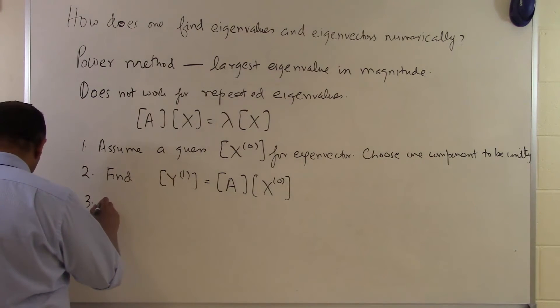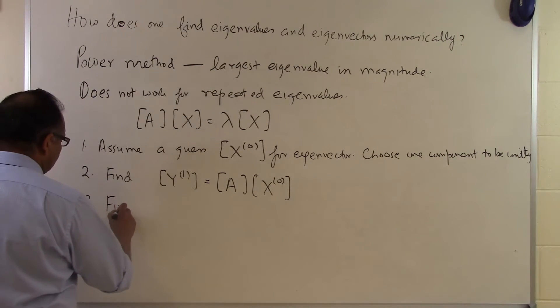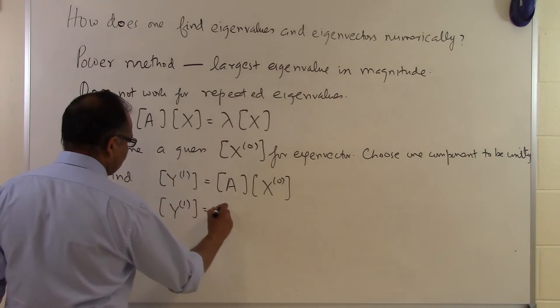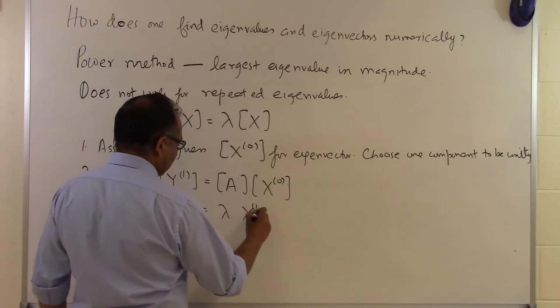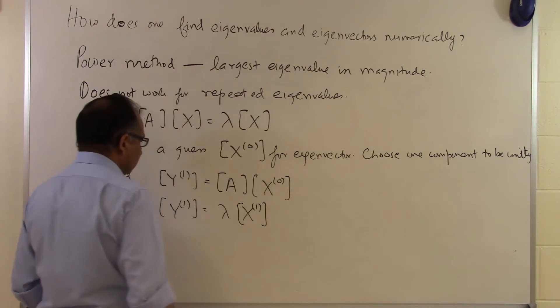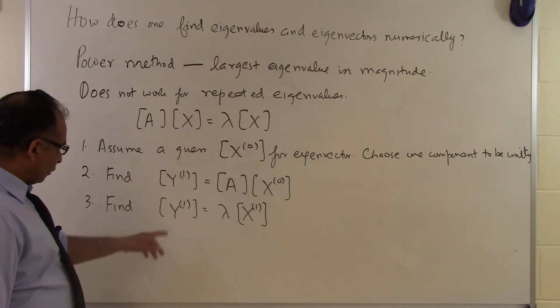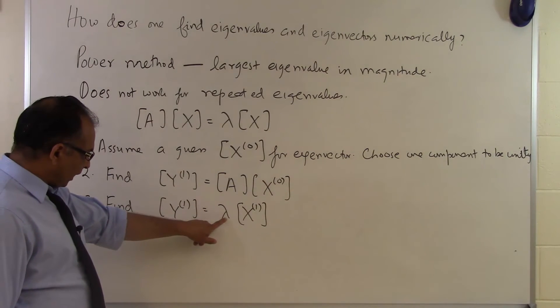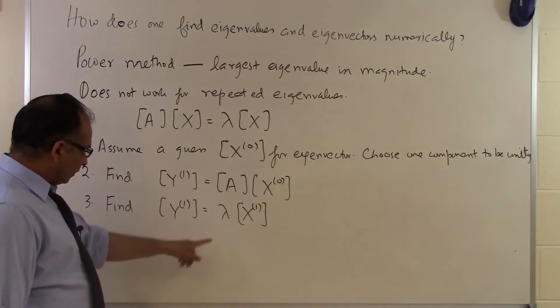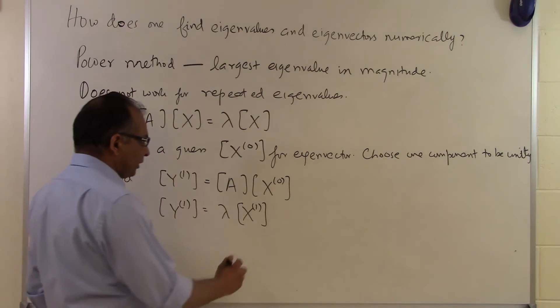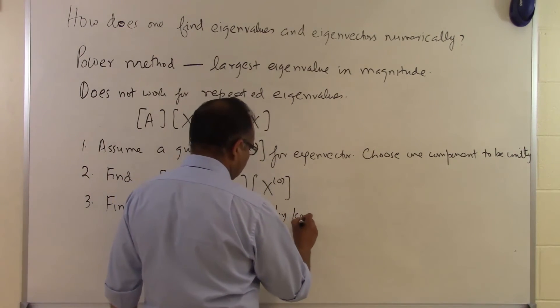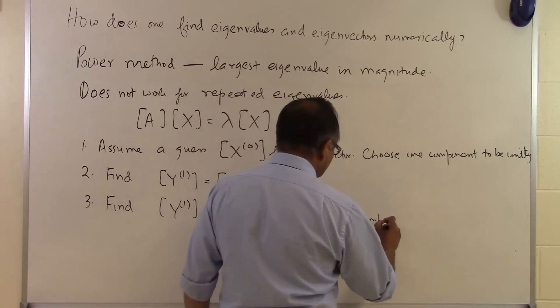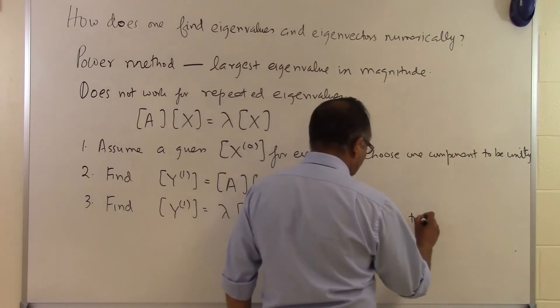How do we find x₁ now? You find x₁ by saying y₁ equals λ times x₁. So you have y₁ which you just found out. The question is: how do I find λ and x₁?